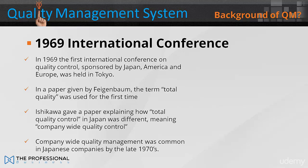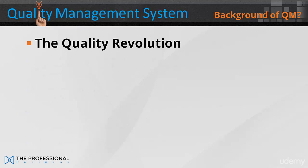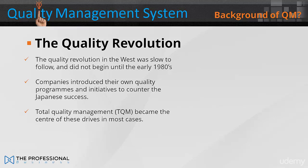Company-wide quality management was common in Japan by the late 1970s. The quality revolution in the West was slow to follow, and did not begin until the early 1980s, when companies introduced their own quality programs and initiatives to counter the Japanese success. Total quality management became the centre of these drives in most cases.